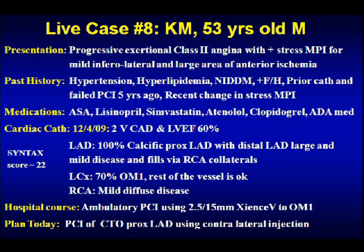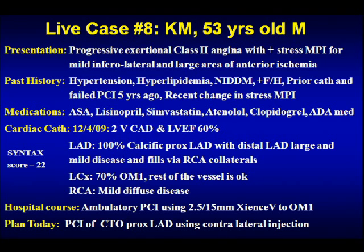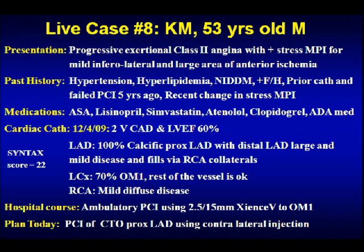Anu has already taken the angiogram. This is the LV gram today — EDP is about 14 to 15. You see the apex is a little dyskinetic, but otherwise the anterolateral wall almost up to the apex is coming in very nicely. The RCA is non-obstructive and you have grade three good collaterals to the LAD — through the septal as well as surface collaterals.